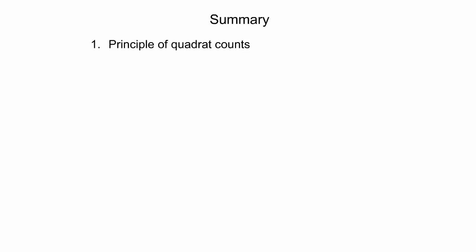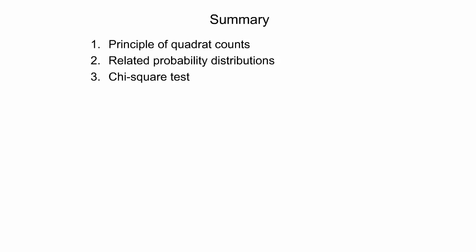This slide summarizes the presentation. It started with an introduction to the principle of quadrat counts and the different types of quadrats typically used. This was followed by a brief review of probability distributions related to hypothesis testing in the context of geographic clusters. Next, the structure of the chi-square test was explained along with examples.